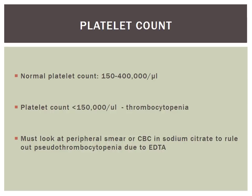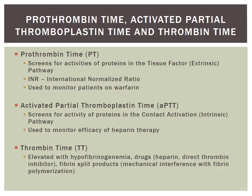The prothrombin time (PT) screens the extrinsic pathway and is reported as an INR, used for monitoring patients on warfarin. Normal INR for anticoagulated patients should be 2 to 3; for valve replacement patients, 2.5 to 3.5. The APTT screens the intrinsic pathway and monitors heparin therapy. If you have an abnormal PTT, you should also do a mixing study as follow-up. The thrombin time (TT) looks at hypofibrinogenemia, other drugs causing clotting problems, and fibrin split products.